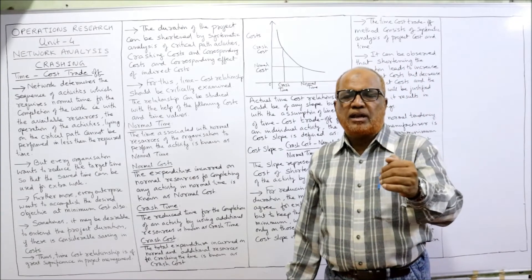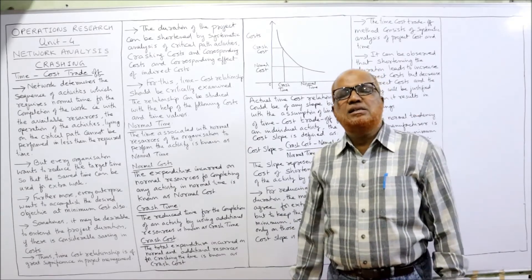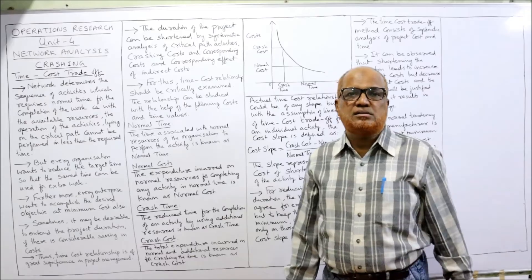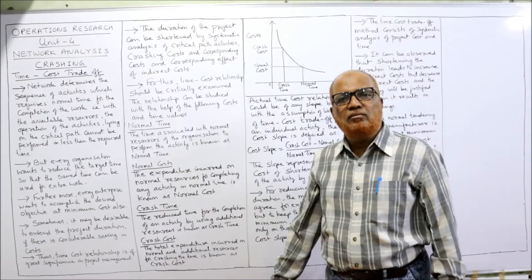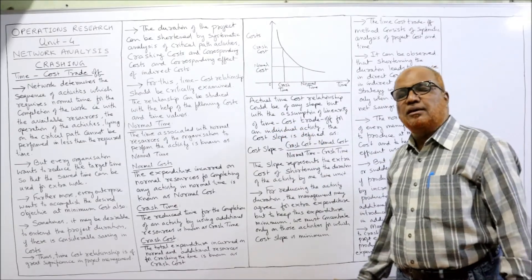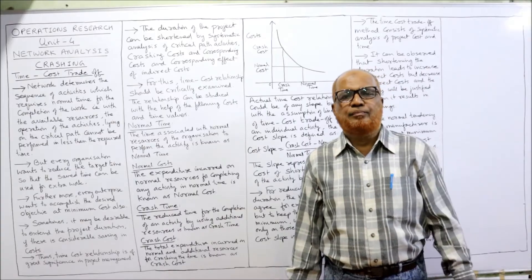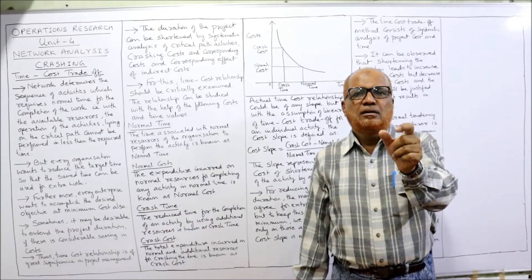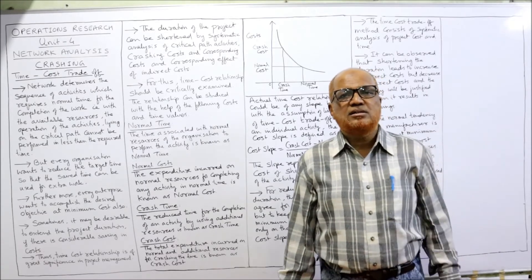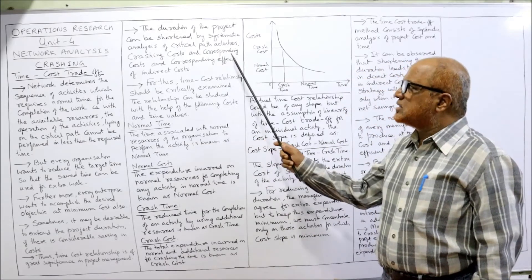If the project manager wants to reduce time, he has to employ additional resources, which will increase cost. So there is an inverse relationship between time and cost: if we reduce time, cost increases; if time is increased, cost reduces. The duration of the project can be shortened by systematic analysis of critical path activities. The critical path is the longest path from the first event to the last event, where EST and LFT values are equal. There should be no delay in critical activities, as any delay will extend the total project duration.